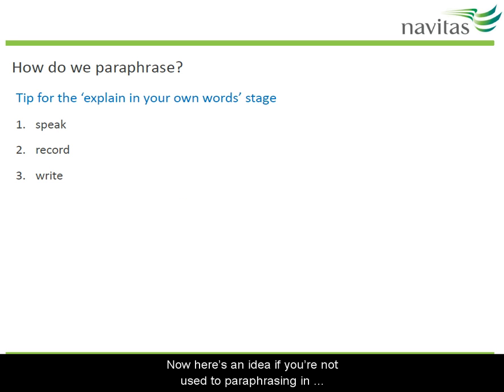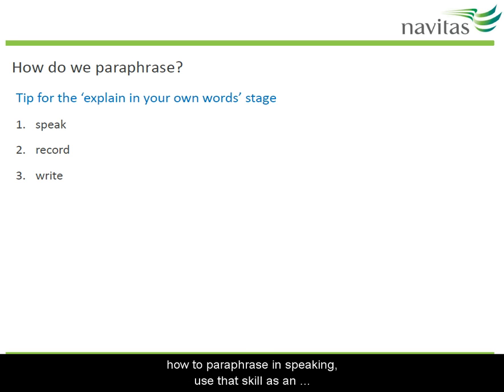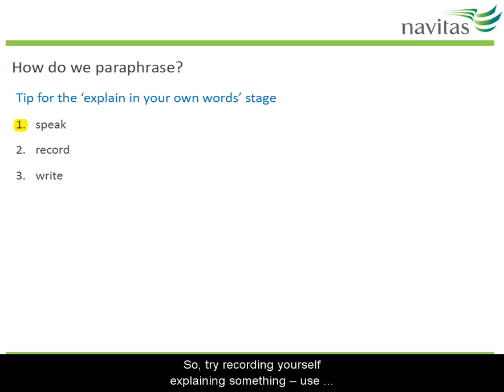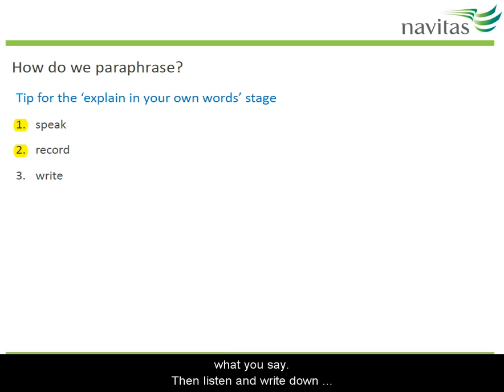Here's an idea if you're not used to paraphrasing in writing. Because you already know how to paraphrase in speaking, use that skill as an intermediate step to get you to the writing stage. Try recording yourself explaining something — you can use your phone — or ask a friend to write down what you say. Then listen back and write down what you said. You can edit and improve if necessary.